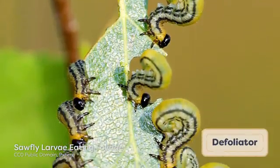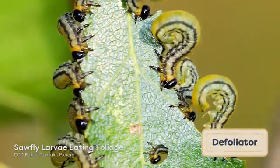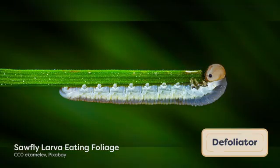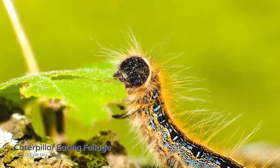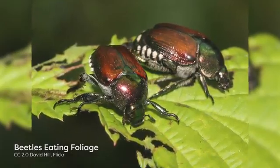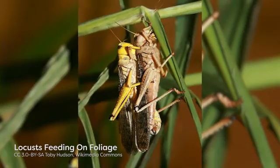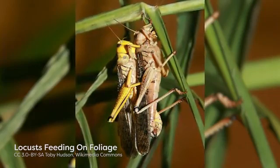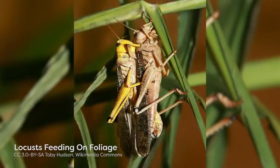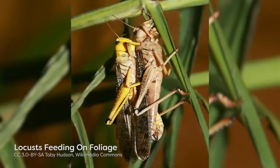We begin with defoliators, insects that feed on the foliage of plants using biting and chewing mouth parts. Common defoliators include Lepidopteran larvae and both larval and adult Coleoptera. Some Orthopterans, like the locusts, are also considered defoliators as they feed primarily on leaves but may also destroy stems and flowers through their voracious feeding behaviour.